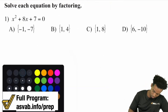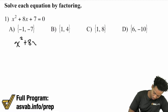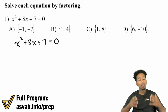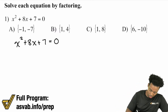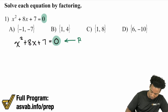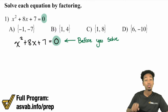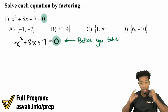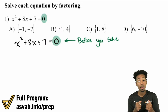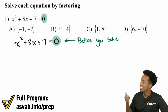We have x squared plus 8x plus 7 equals 0. The way we're going to solve quadratic equations is by first noticing that there is a zero by itself on the right side — this is necessary, so before you solve make sure that's there. Once you have the zero on the right side, it's time to apply your knowledge of factoring that trinomial so you can get it into parentheses, and then we can apply the zero product property.